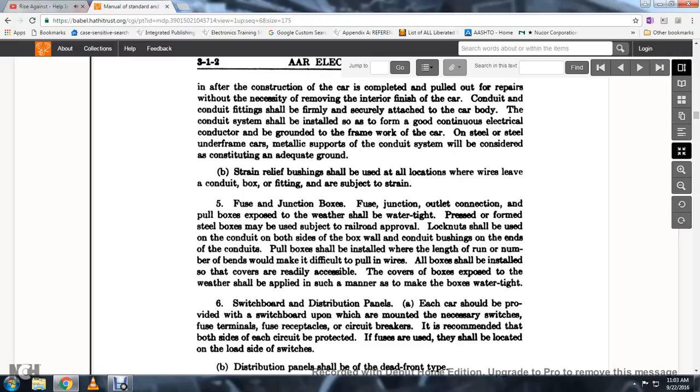Strain relief shall be used at all locations where wire leaves the conduit or box. The fittings are subject to strain at the fuse and junction box. The fuse and junction outlet connection to the pull box exposed to weather should be watertight. Pressed and formed steel boxes may be used subject to railroad approval. Lock nuts should be used on conduit on both sides of the box with conduit bushings on the ends of each conduit. Pull boxes shall be installed with the length of run with normal bends that will make difficulty to pull wires. All boxes should be installed so that covers are readily accessible. Covers in boxes exposed to weather should be applied to make the boxes watertight.